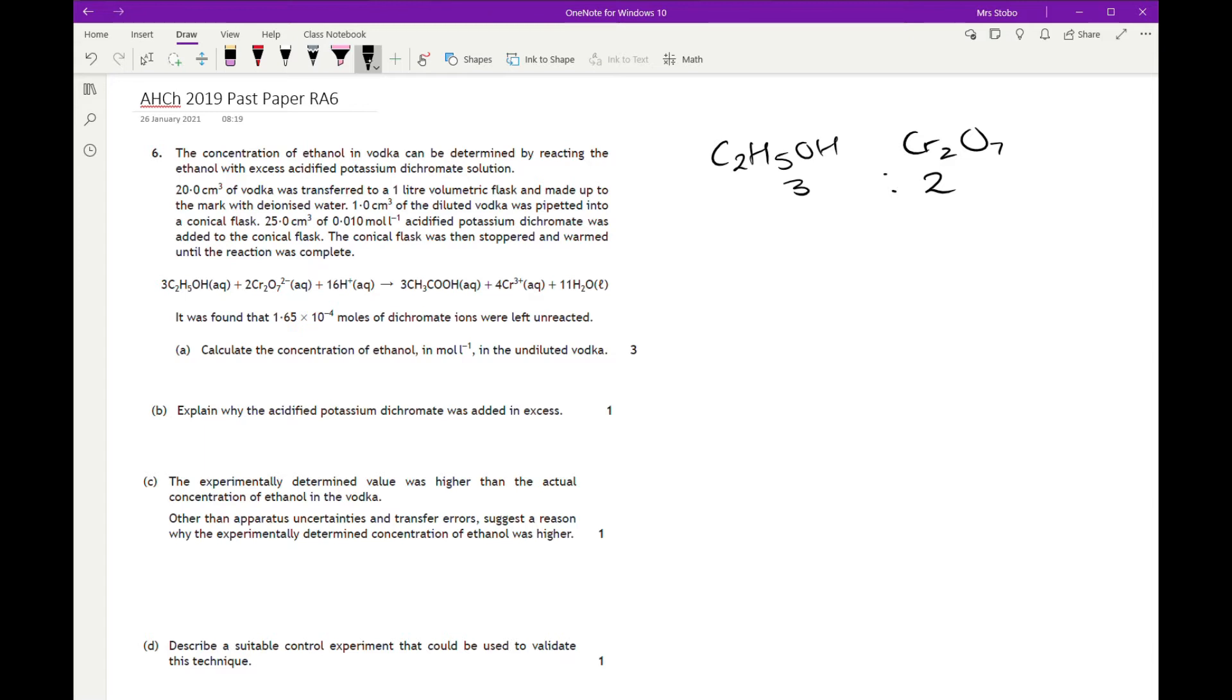The first bit you've got to start with is this 1.65×10⁻⁴ was unreacted. So this is the back titration we're running here. If we have the unreacted amount, you have to figure out the initial to work out how much you started with.